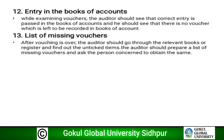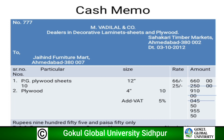Entry in the books of accounts: while examining vouchers, the auditor should see that the correct entry has been passed in the books of accounts and that no voucher is left unrecorded. List of missing vouchers: after vouching is over, the auditor should go through the relevant books or registers, find out unticked items, prepare a list of missing vouchers, and ask the person concerned to obtain them.